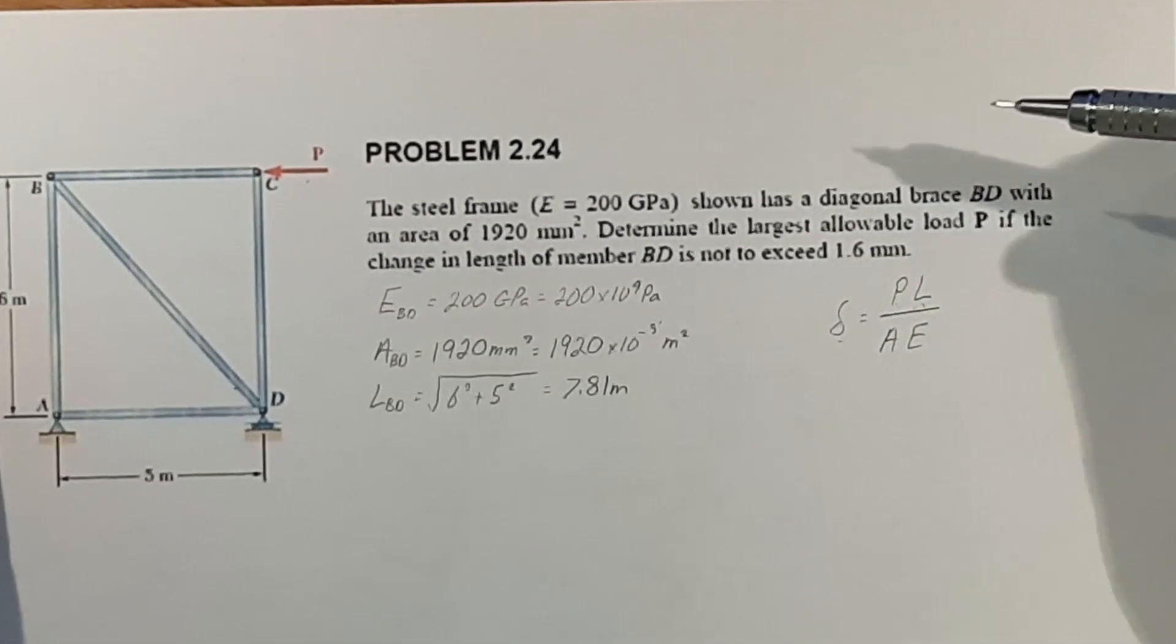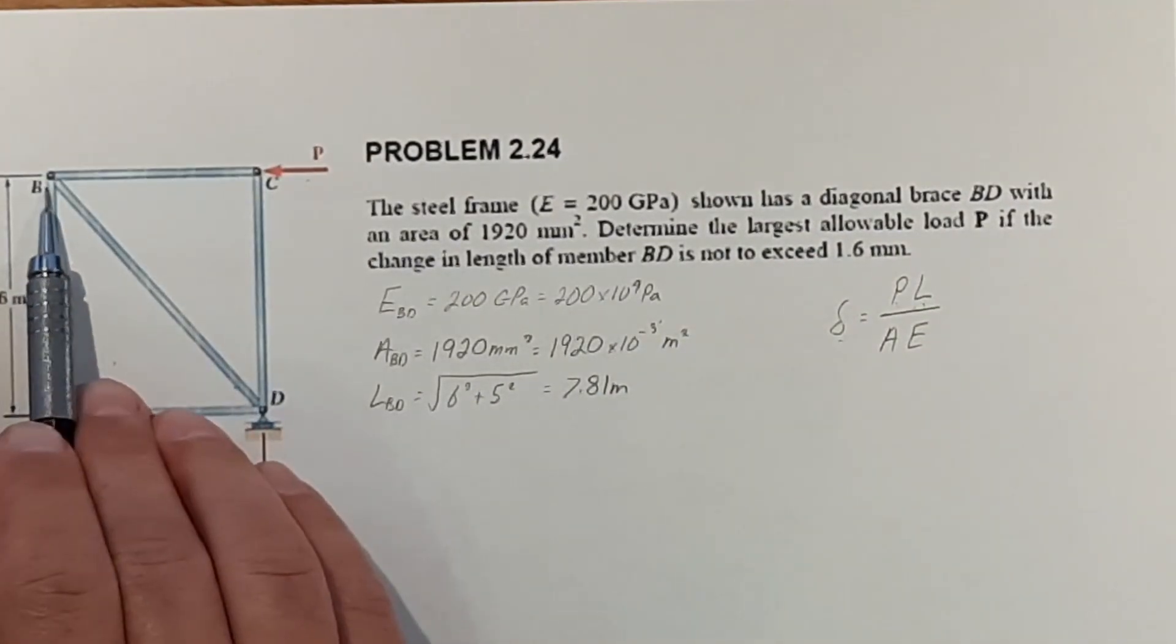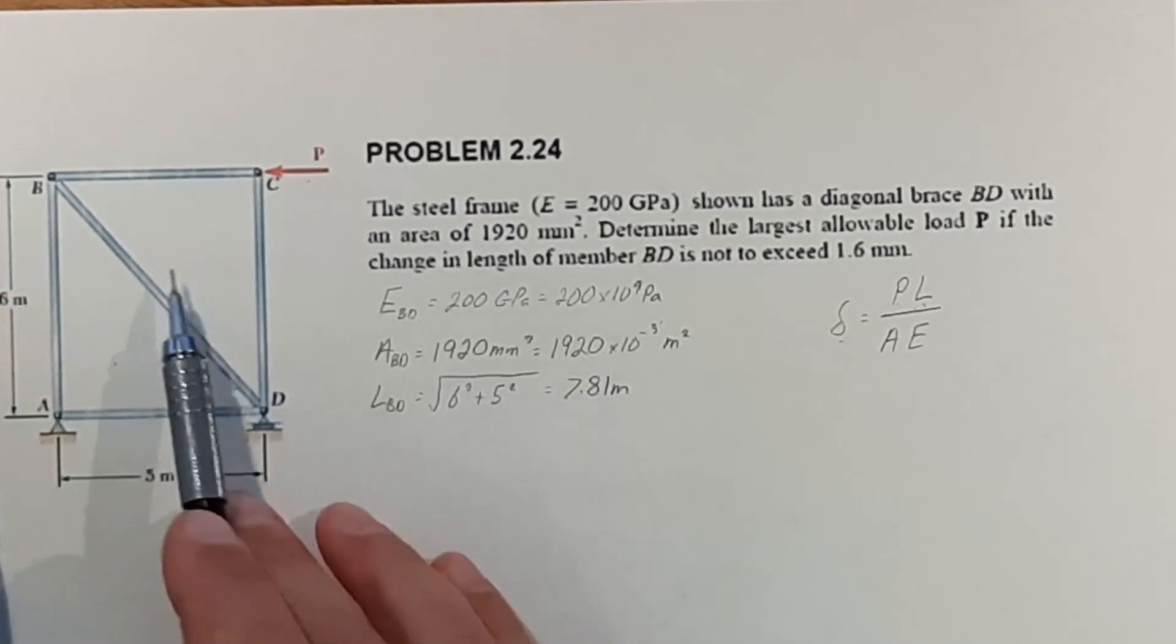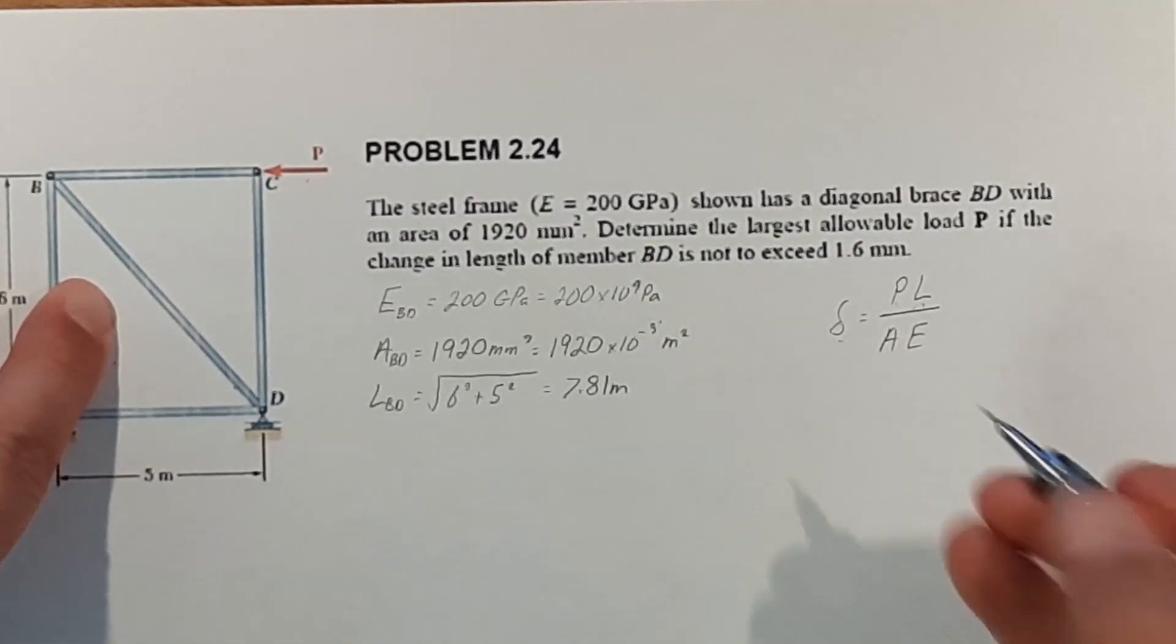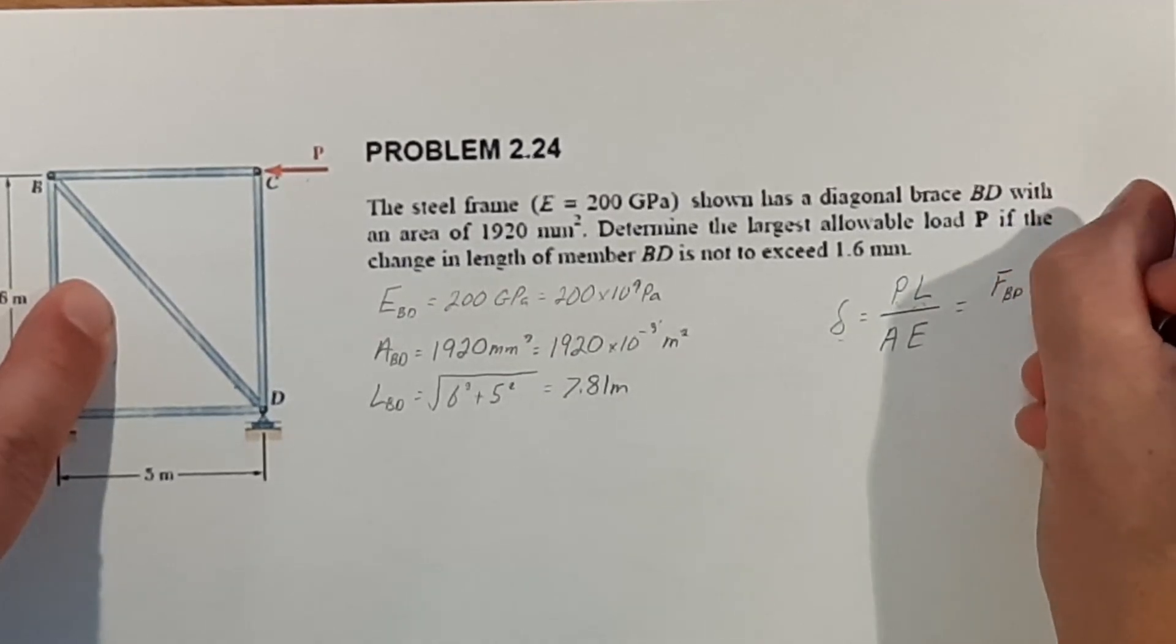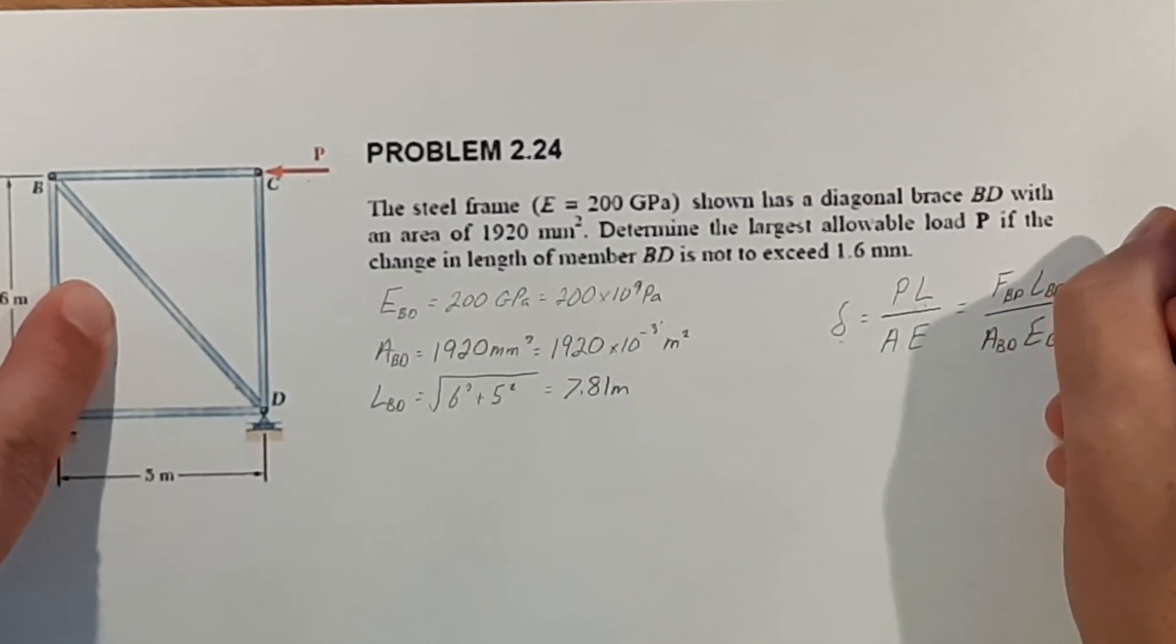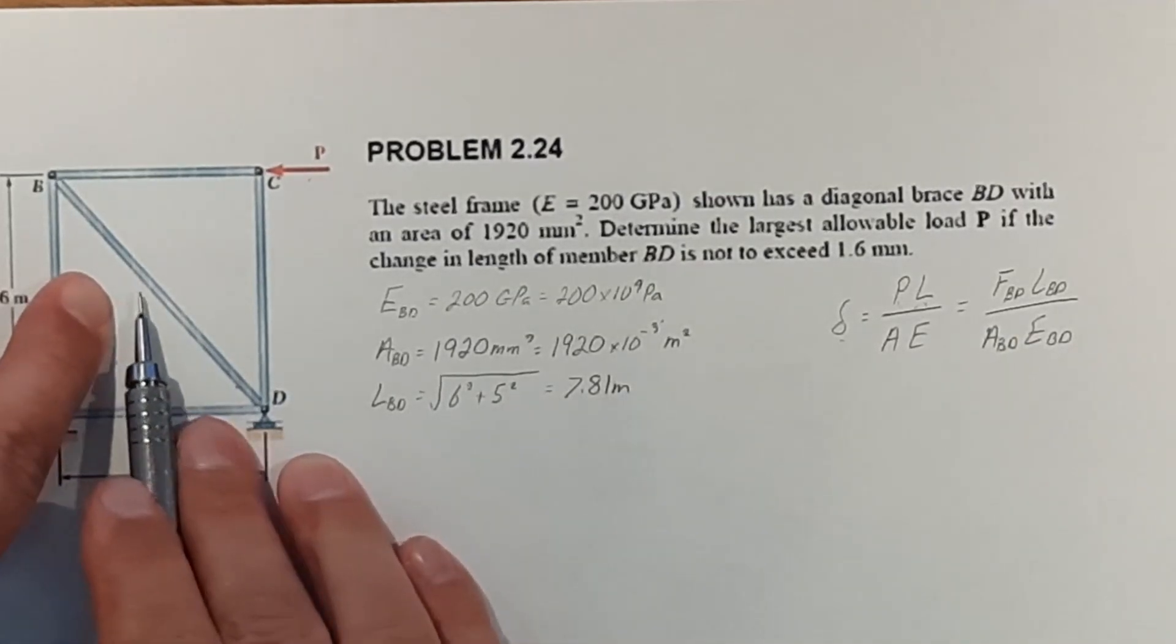But if you remember from doing structural analysis, all the forces at a point, say point B, all these forces should add up to zero. So if we configure what the force is in BD, instead of P, we're going to make that F of BD times L of BD over the area of BD times modulus of elasticity of BD. So that's going to allow us to rearrange this to solve for the force in BD.